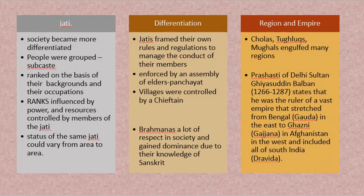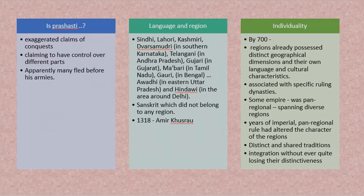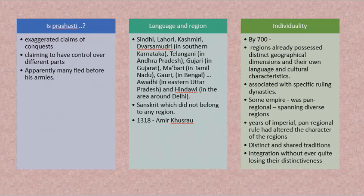Prasasti is not necessarily an exaggerated claim of conquest — it is prose or poetry written in appreciation of somebody, claiming the person had great riches, victories, or control over different parts of the world. Apparently, based on this prasasti, many people became afraid of a particular maharaja, so there may have been no need for war — they became friendly and economic and political ties became easier. That is also possibly one reason why prasastis were published far and wide.